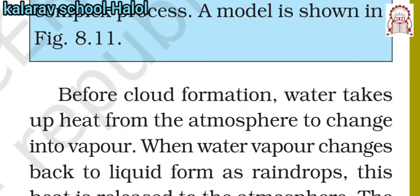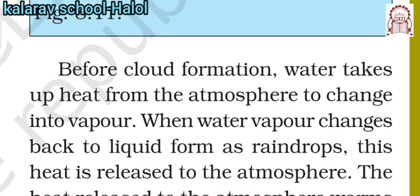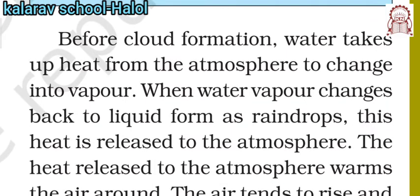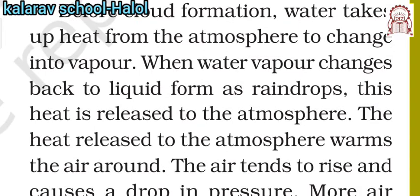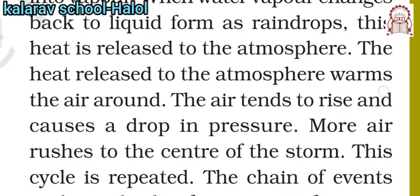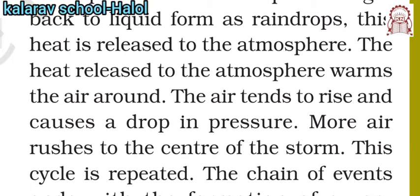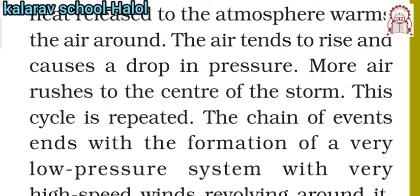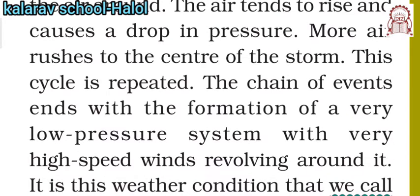Regarding cloud formation: water from the surface of the earth goes up and changes into vapor due to heat. When the vapor changes into liquid, it forms raindrops. The formation of raindrops takes place by release of heat. The heat released to the atmosphere makes the air warm, the warm air rises up and drops in pressure. More air rushes in to the center, and this cycle is repeated — producing high-speed revolving wind.